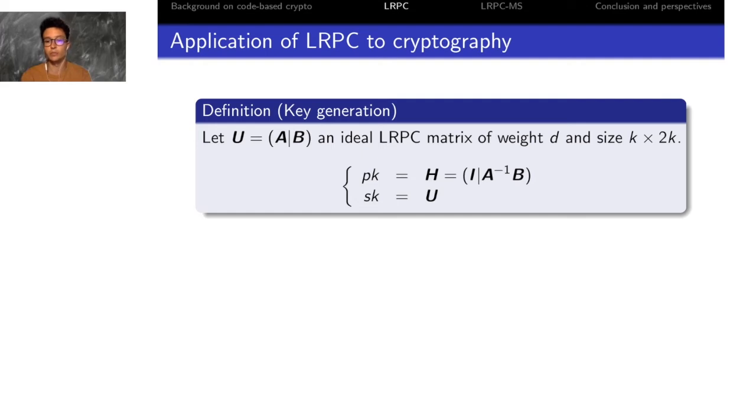For the key generation, your secret key is an ideal low rank parity check matrix of a small weight D, and your public key is a masked version of this parity check matrix, given the systematic form of the matrix U.